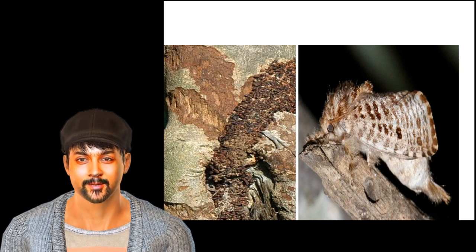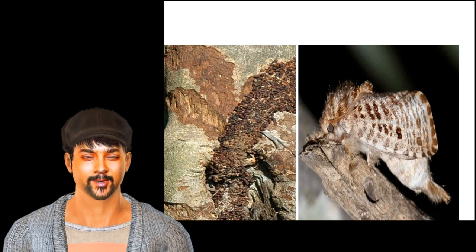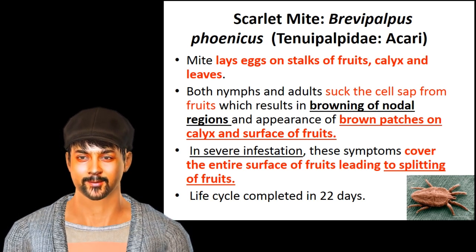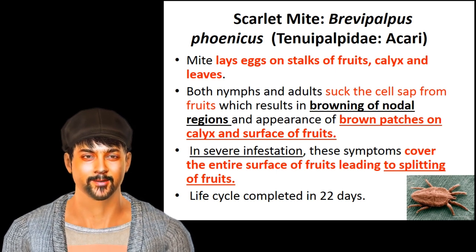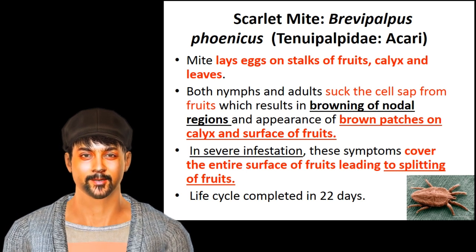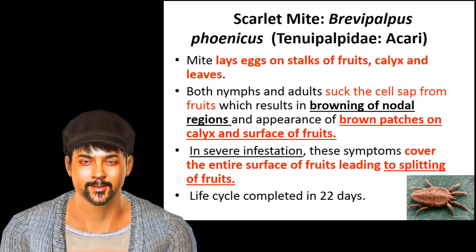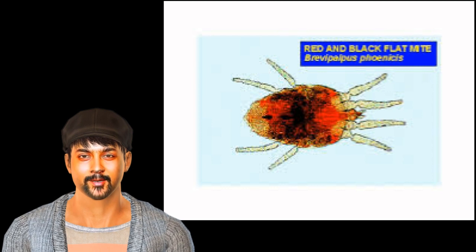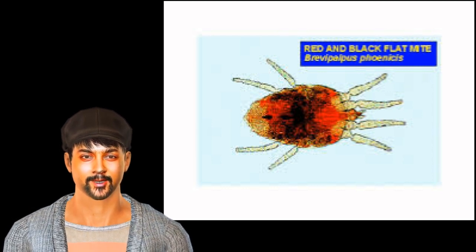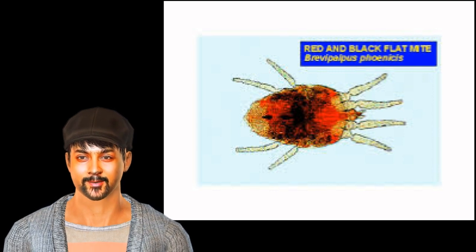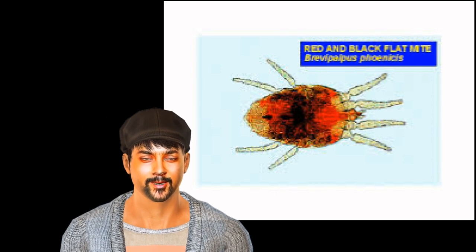Also dip a small piece of cotton in a fumigant like chloroform, ether, or kerosene, introduce it into the tunnel, and seal the opening with clear mud. The last pest is the minor sucking pest — scarlet mite, Brevipalpus phoenicis, family Tenuipalpidae, order Acari. Mites lay eggs on the stalk of fruits, calyx, and leaves. Both nymphs and adults suck cell sap from fruits, resulting in browning of nodal regions and brown patches on the calyx and fruit surface. In severe infestation, symptoms cover the entire fruit surface, leading to splitting of fruits. The life cycle is completed in 22 days. Use any systemic insecticide to control the scarlet mite.